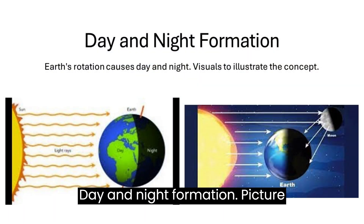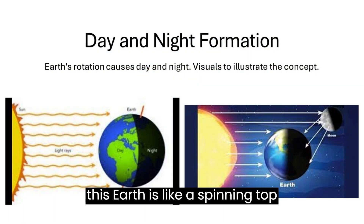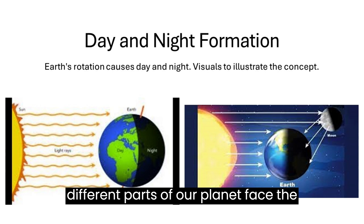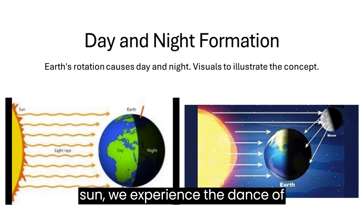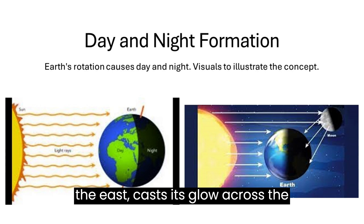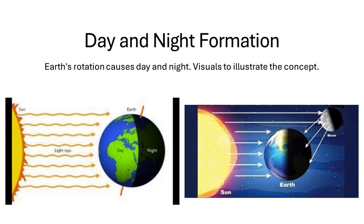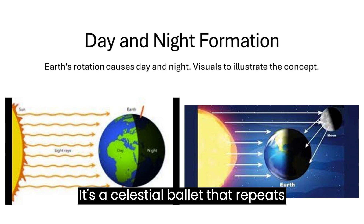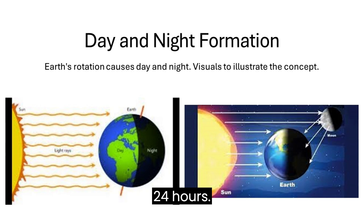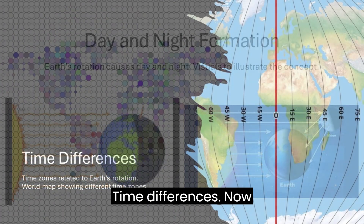Picture this: Earth is like a spinning top, rotating on its axis. As different parts of our planet face the sun, we experience the dance of day and night. The sun rises in the east, casts its glow across the landscape, and sets in the west. It's a celestial ballet that repeats itself with remarkable precision every 24 hours.